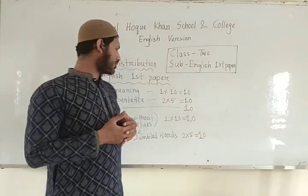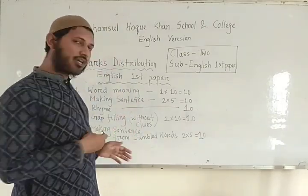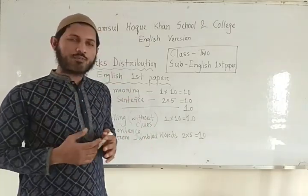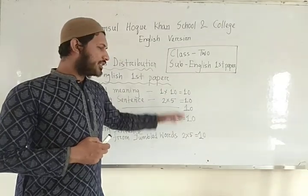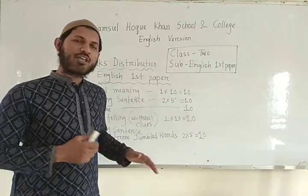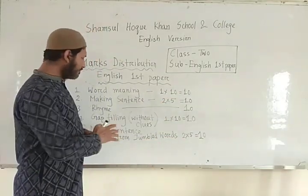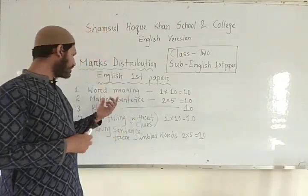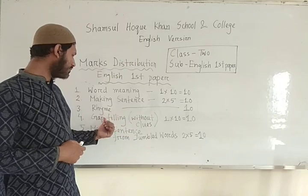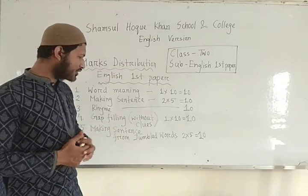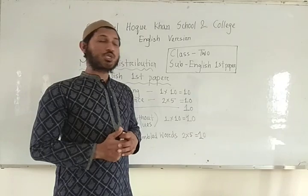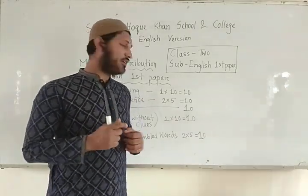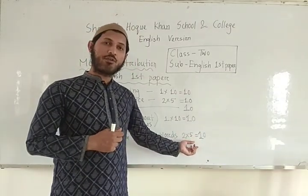So these are all about English first paper marks distribution. There are five items, and from these five items you can easily get 10 marks each — that is 50 marks total. These 50 marks become very easy if you follow the previous lessons: word meanings, making sentences, rhymes, gap fillings, and making sentences from jumbled words. It is very clear and it will be very easy to achieve 50 marks.